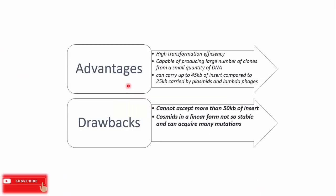Cosmids have various advantages and disadvantages. They have high transformation efficiency and are capable of producing a large number of clones from a small quantity of DNA. They can carry up to 45 kb of insert, compared to 25 kb carried by plasmids and lambda phages. However, cosmids cannot accept more than 50 kb of insert. Also, cosmid vectors in linear form are not stable and can acquire mutations easily.